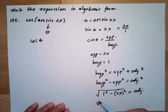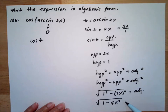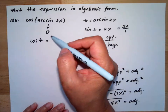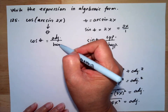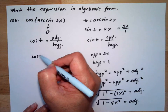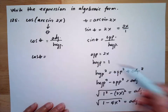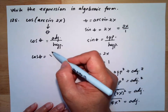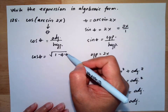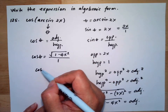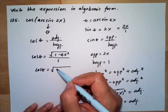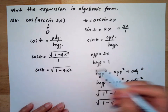This gives us adjacent equals √(1 - 4x²). We know cosine theta is adjacent over hypotenuse, so cosine theta equals √(1 - 4x²) divided by 1. Therefore, cosine of arcsine 2x equals √(1 - 4x²).